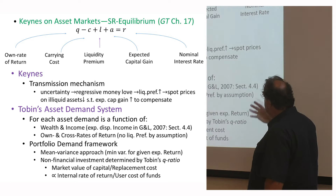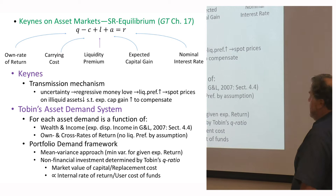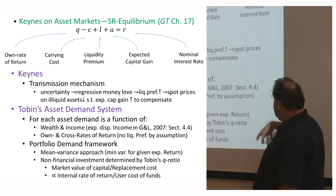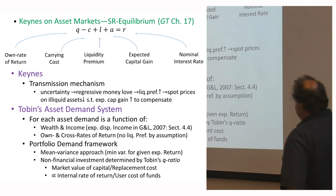There's no liquidity preference in Tobin's model. What you have instead is volatility of return and anxiety about volatility — risk rather than uncertainty. You get the standard mean-variance approach: minimise variance on your portfolio for a given expected return, accommodating money, bonds, and equity.